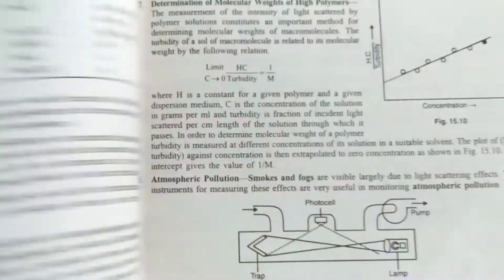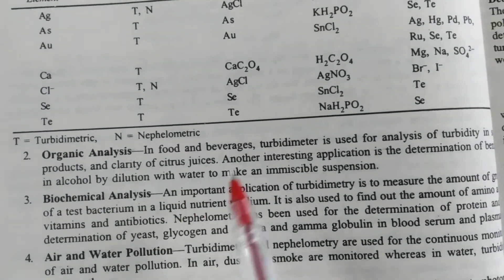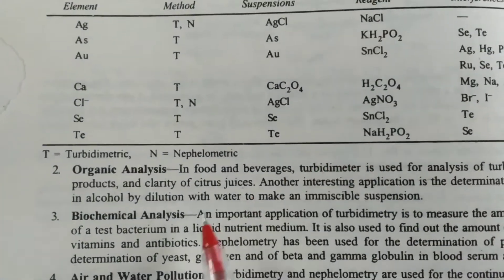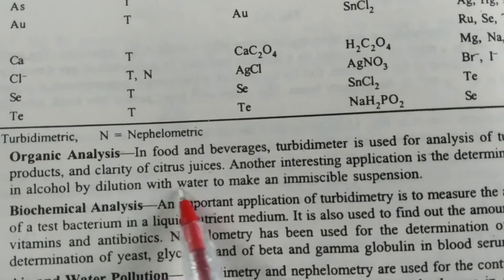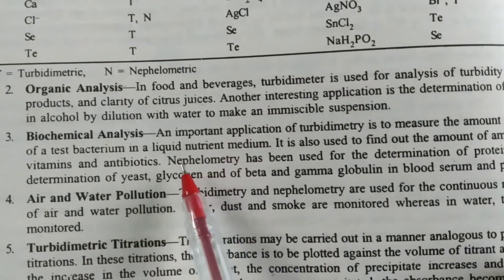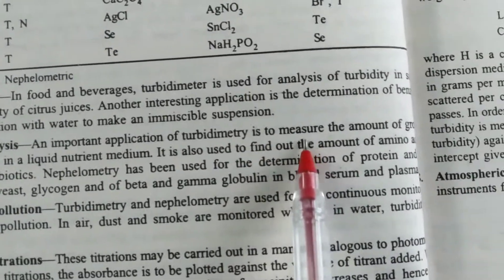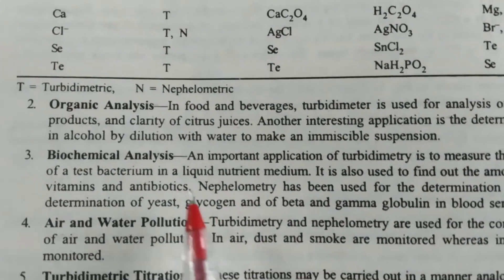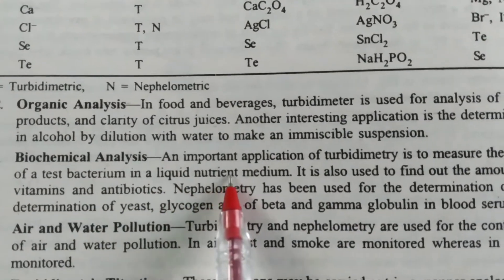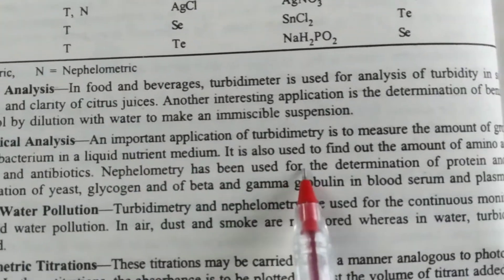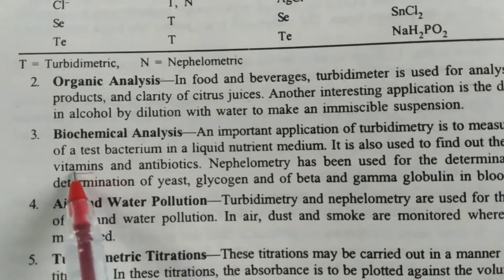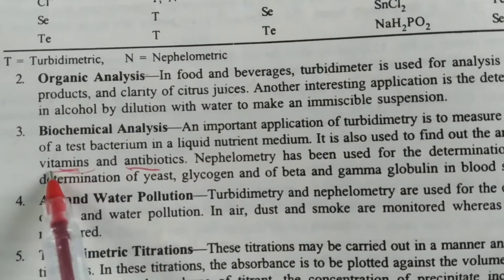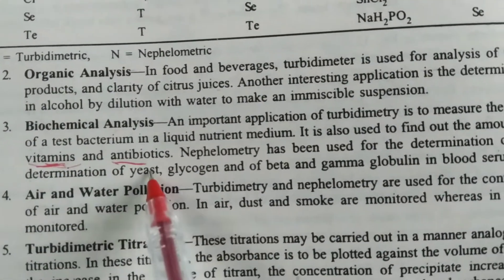Applications in organic analysis include clarity of citrus juices. Biochemical uses of turbidimetry include measurement of the amount of bacterium in liquid nutrient medium. It is also useful to find out the amount of amino acids, vitamins, and antibiotics.